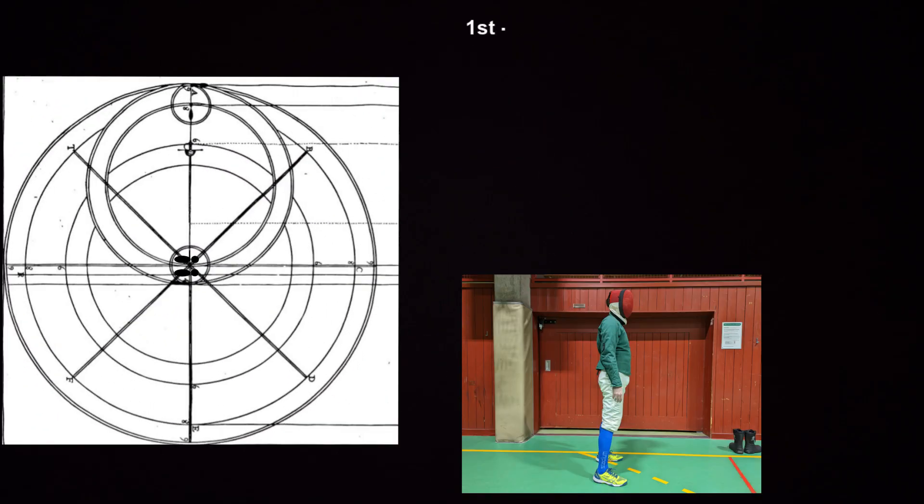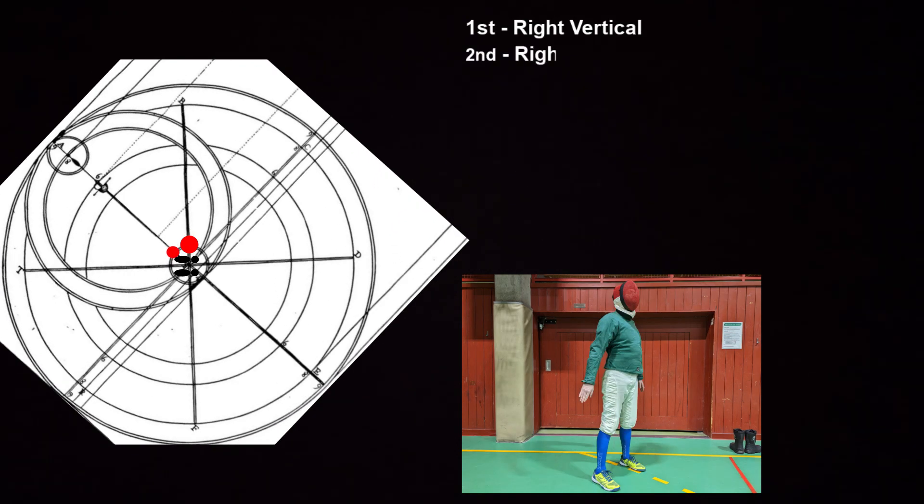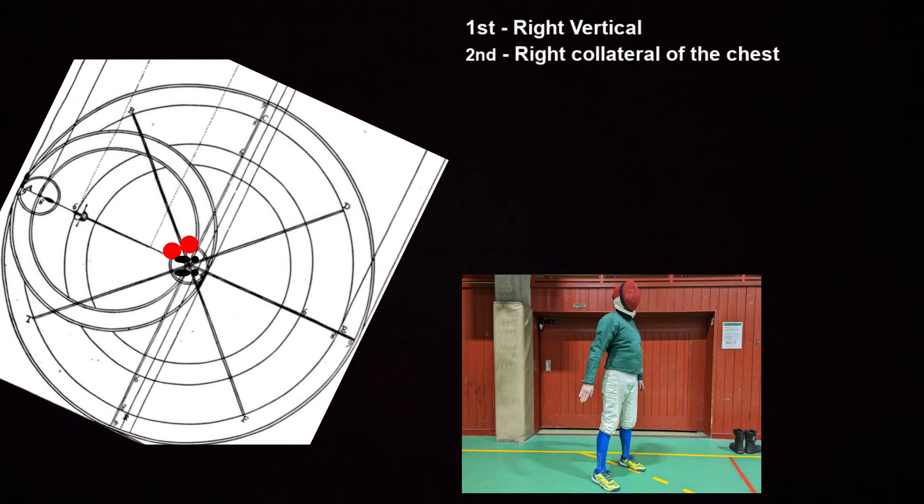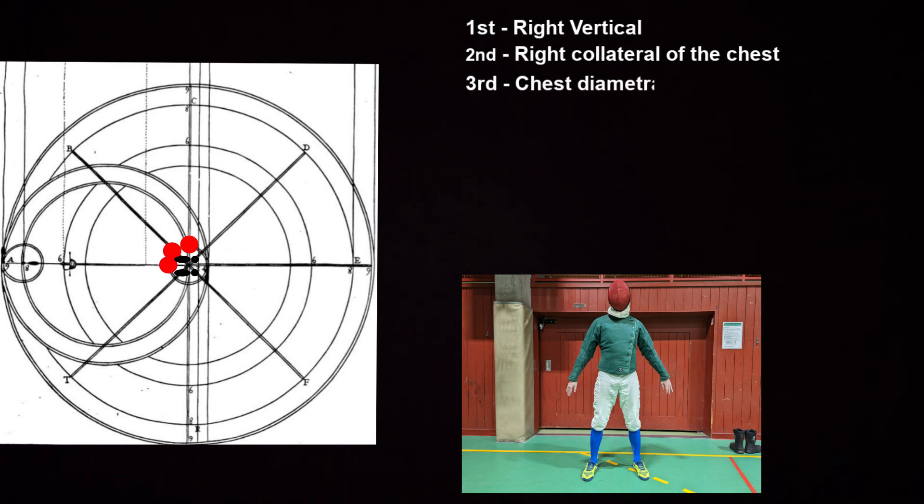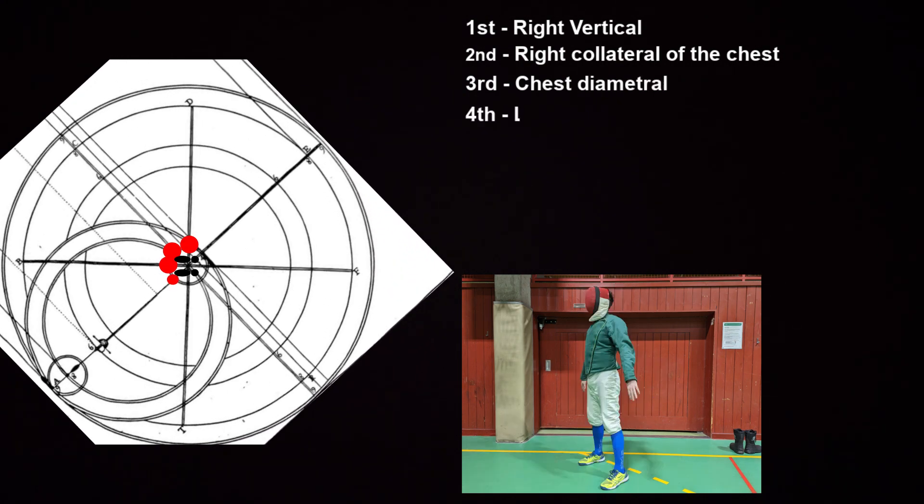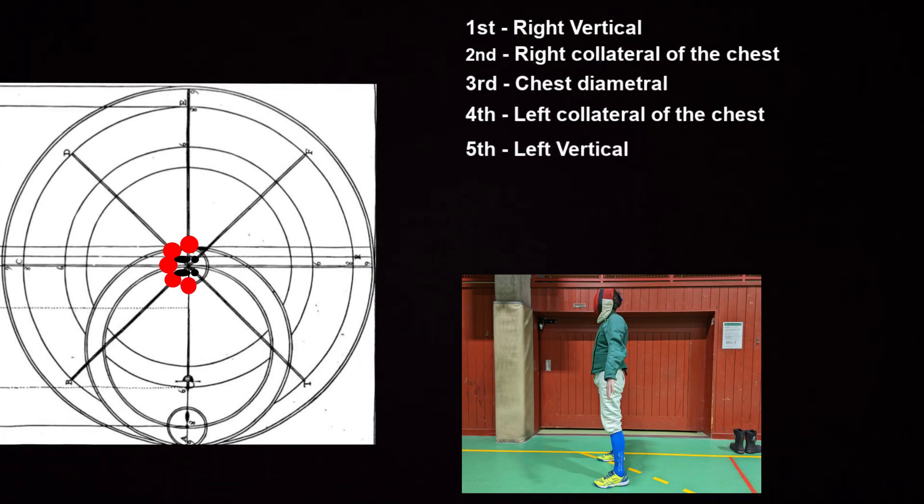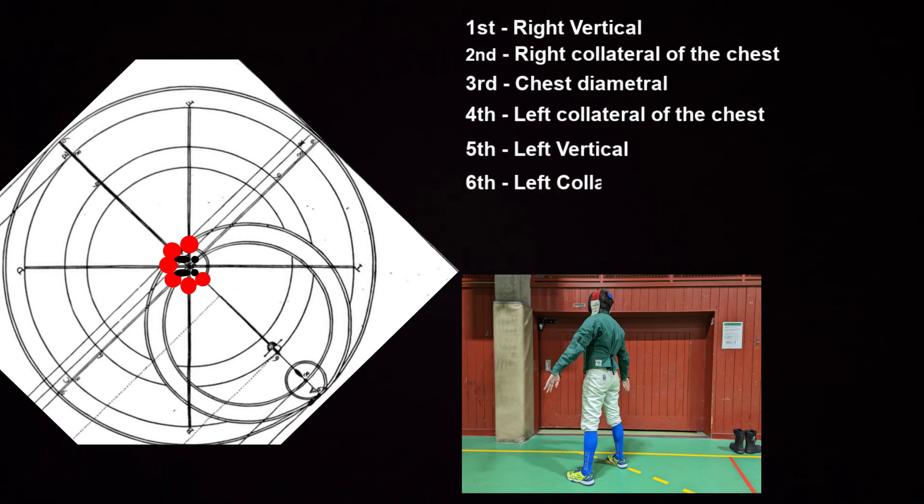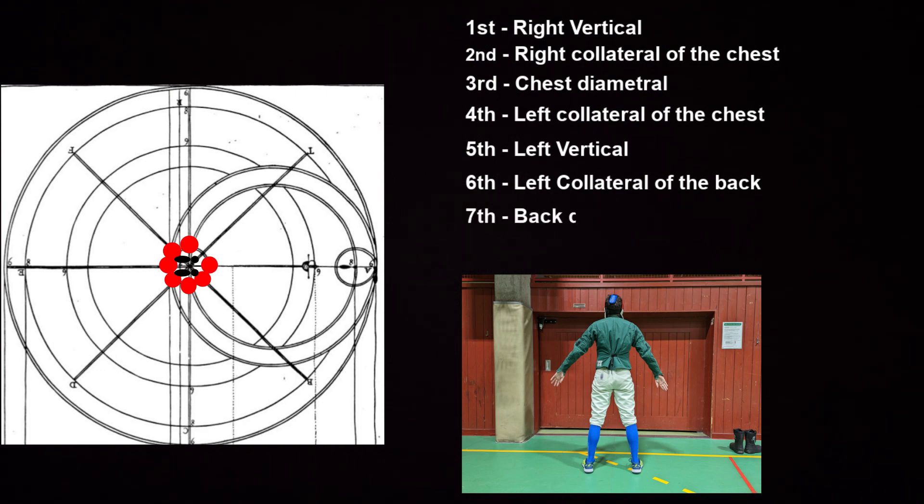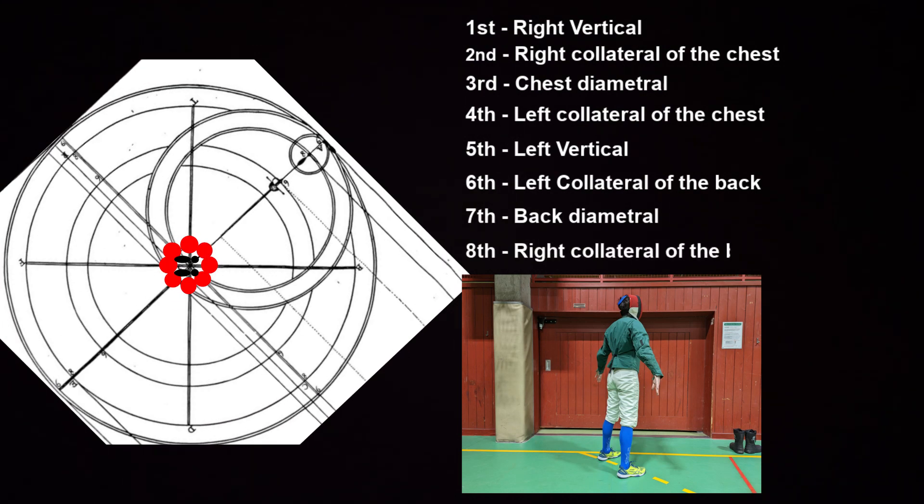The first line is the right vertical. The second line is the right collateral of the chest. The third is the chest diametral. Fourth, the left collateral of the chest. The fifth, the left vertical. The sixth, the left collateral of the back. The seventh, the back diametral. The eighth, the right collateral of the back.